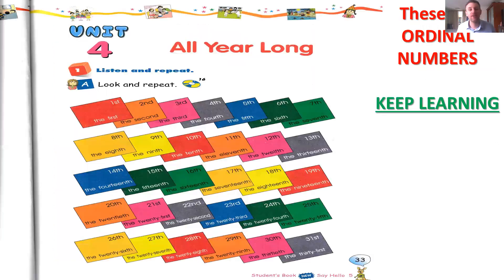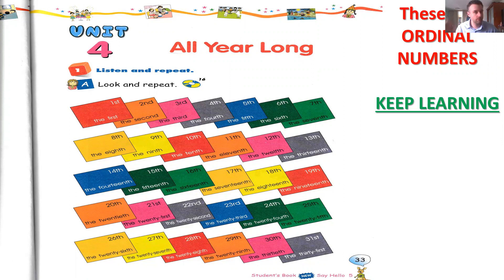Now let's take a look at ordinal numbers. Be careful — you know the difference between cardinal numbers and ordinal numbers. Cardinal numbers: one, two, three, four, five, one million. Ordinal numbers: the first, the second, the third, the fourth, the fifth, and you continue. Be careful: cardinal and ordinal. Now we continue because it's a fast review, so we go fast.